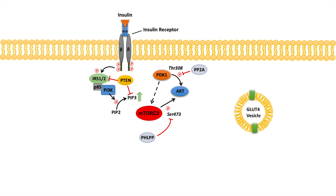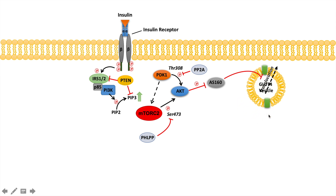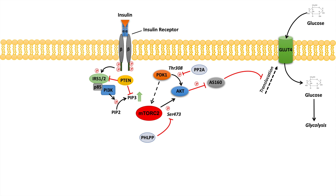In an insulin-stimulated cell, there are a reservoir of vesicles within the cell that contain glucose transporter 4, or GLUT4. When this pathway is not activated, the translocation of these vesicles is inhibited by AS160. However, when AKT is activated, AKT will actually inhibit AS160 through phosphorylation, which inhibits the inhibitor. So vesicles containing GLUT4 will reach the cell membrane, GLUT4 will be placed within the cell membrane, allowing glucose to enter the cell and undergo glycolysis.